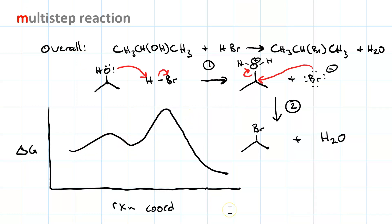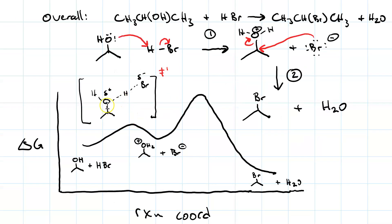On the two-step reaction coordinate, the first transition state height may be lower than the second because the bond being broken in step two — the C–O bond — is probably stronger than the H–Br bond. In the valley sits the intermediate: the protonated alcohol and the bromide ion. At the first transition state, the O–H bond is forming and the H–Br bond is breaking; because the intermediate has a positive on oxygen and negative on bromine, the transition state has a delta-plus on oxygen and delta-minus on bromine.